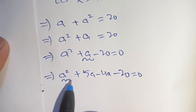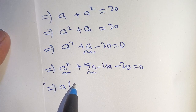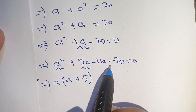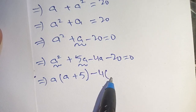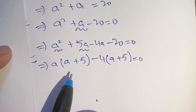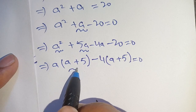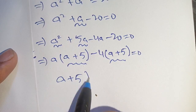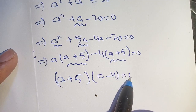We can take a out from the first two terms and we get a times (a plus 5), then we take out (a plus 5) from the remaining terms and we get (a plus 5) times (a minus 4) is equal to 0.